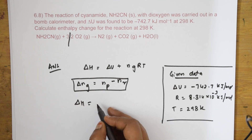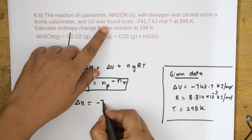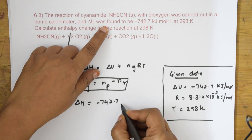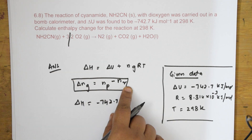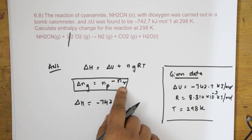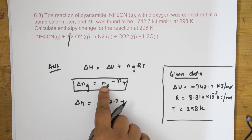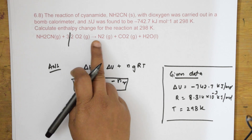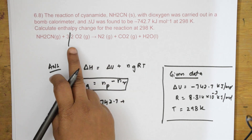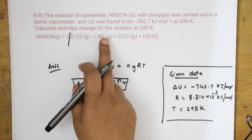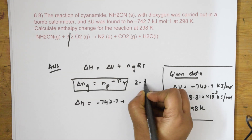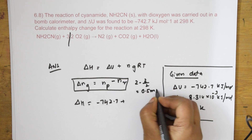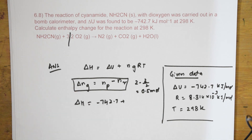Substituting: ΔH = ΔU + (np − nr)RT. ΔU = −742.7 kJ/mol. On the product side we have 2 moles of gaseous product, and on the reactant side we have 3/2 moles of O₂. So Δng = 2 − 3/2 = 0.5 moles.